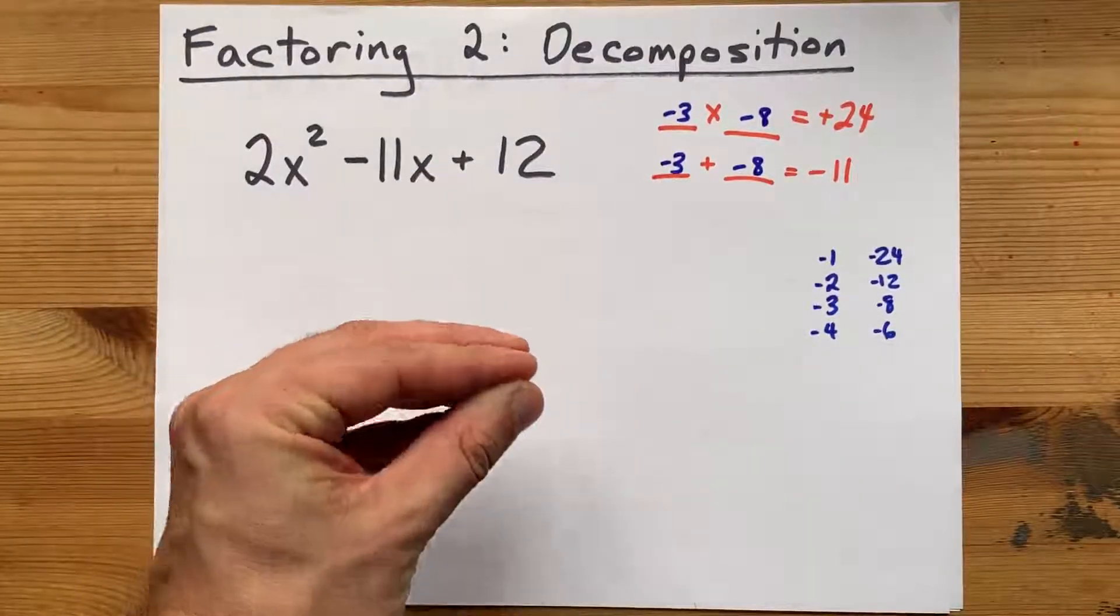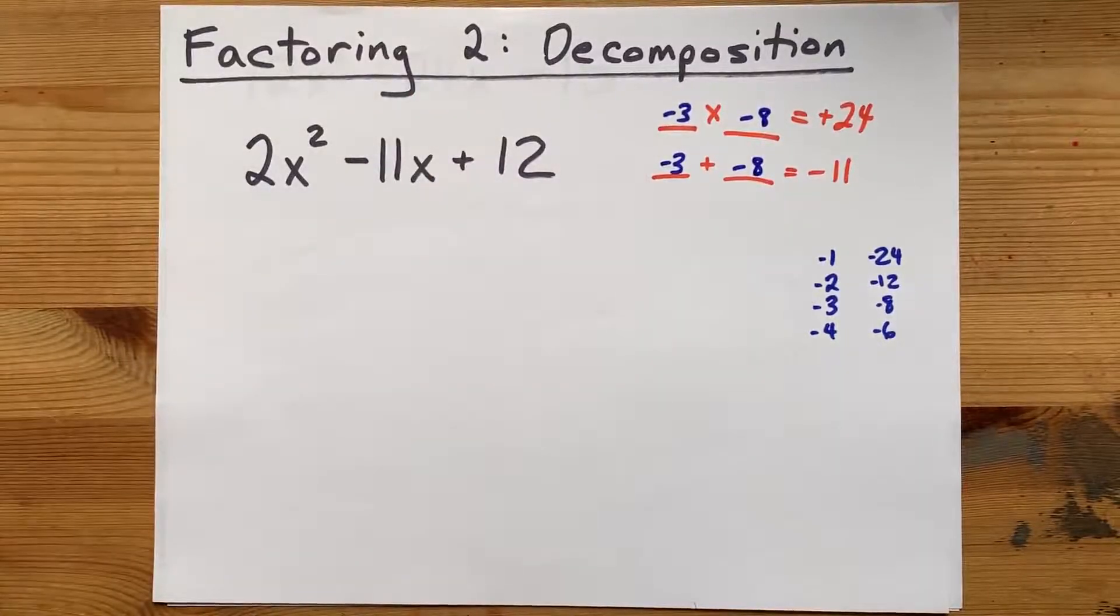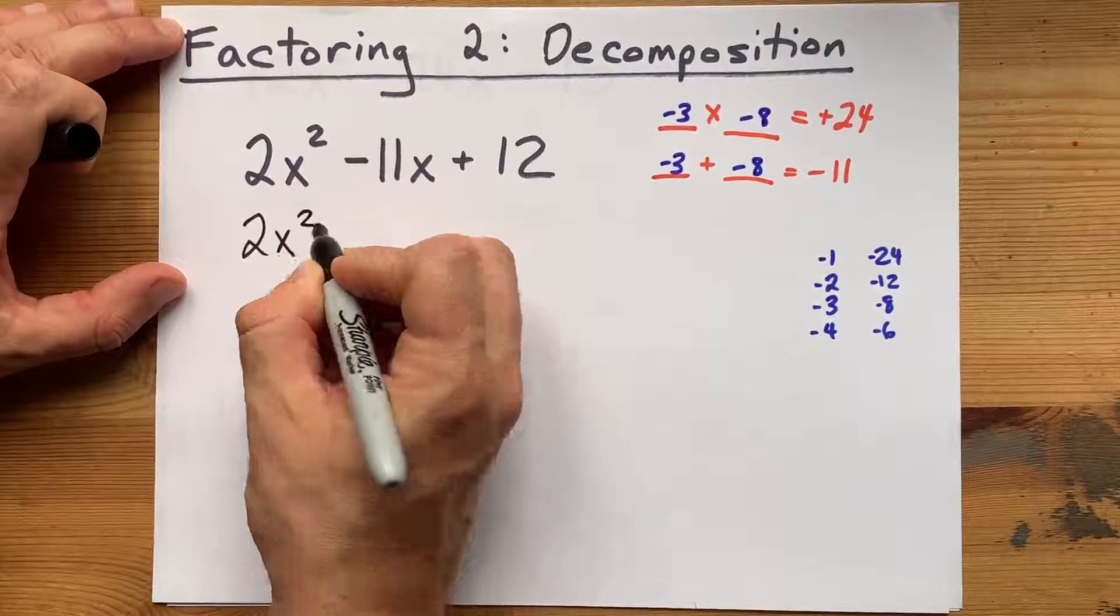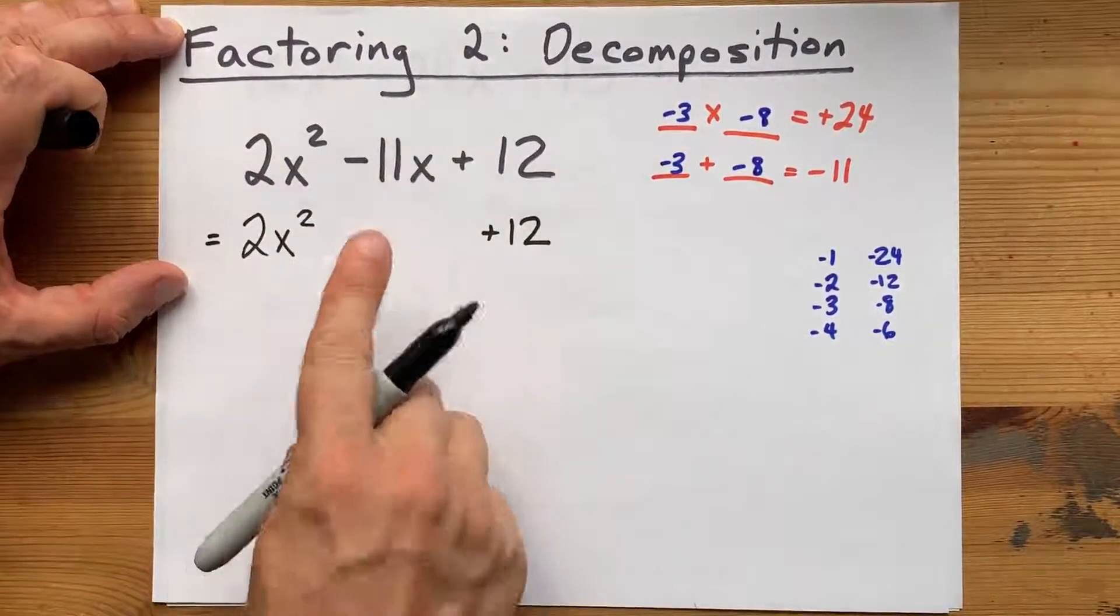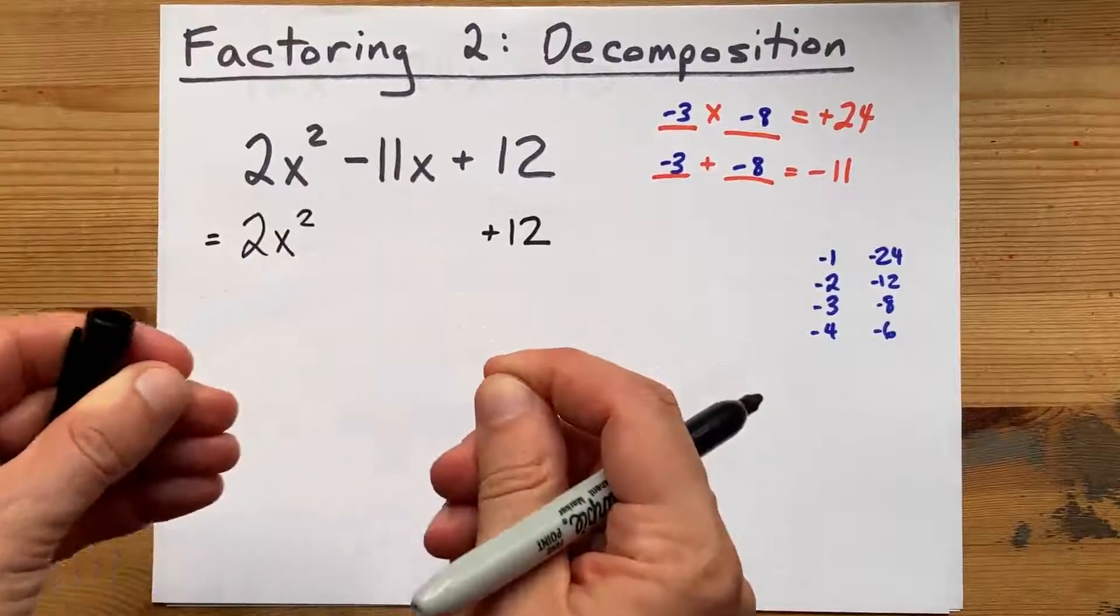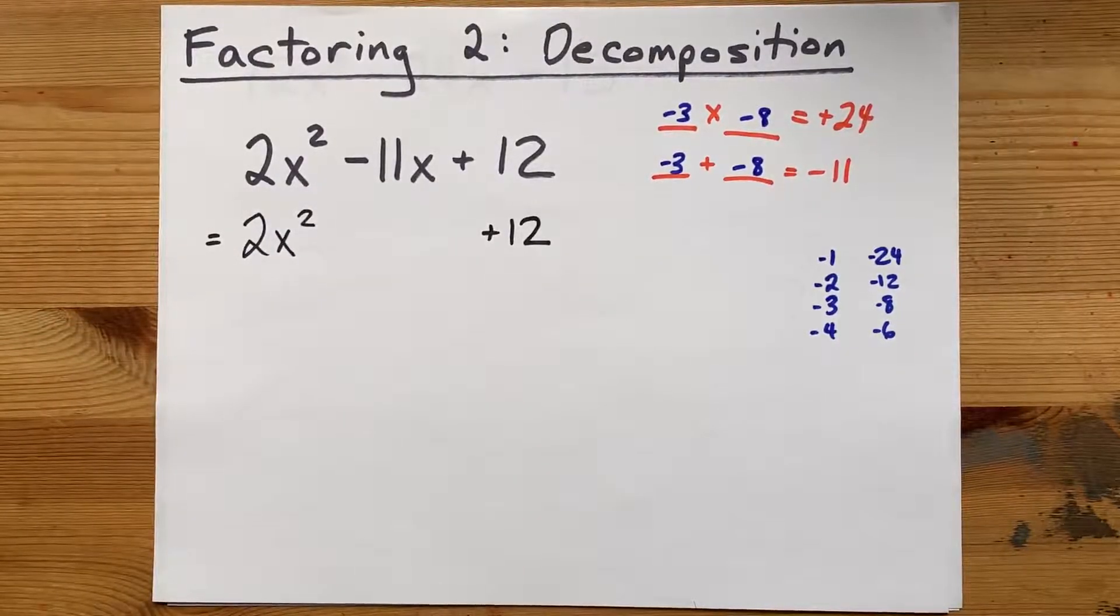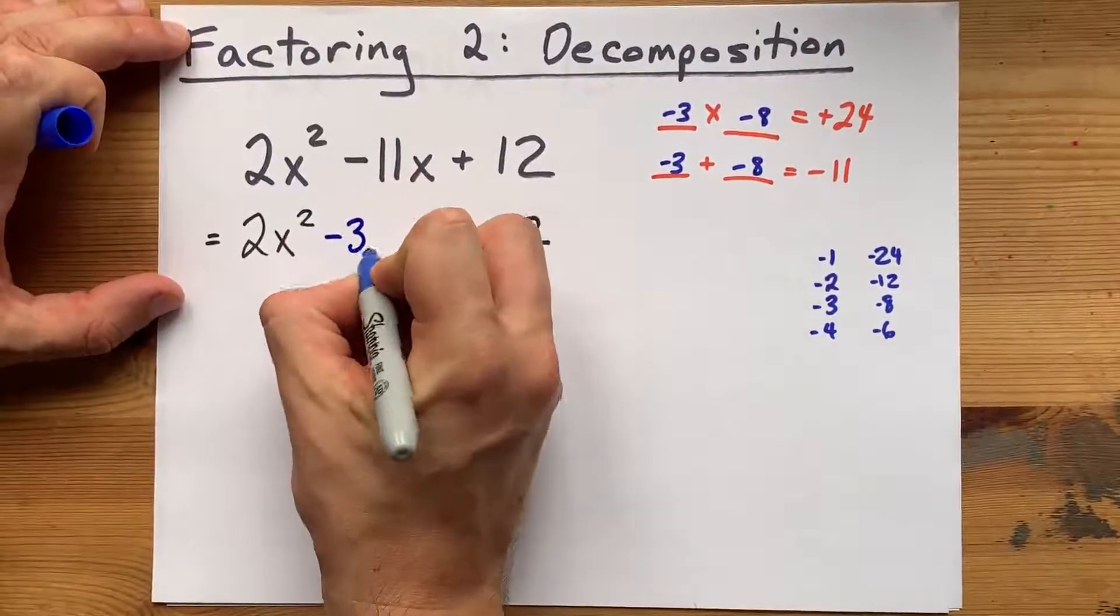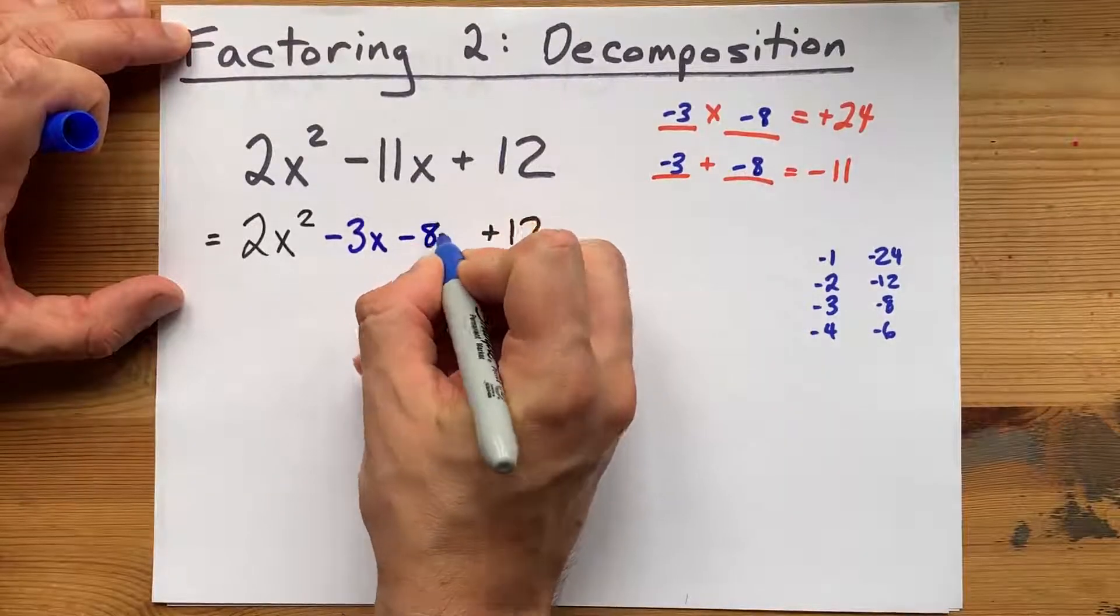Now, what do we do with those? Here's the decomposition part. I'm going to keep my 2x squared, and I'm going to keep my positive 12. It's the middle term that I'm going to decompose or break into two separate parts. Negative 3 is going to get written in here with an x, and negative 8 is going to get written in here with an x.